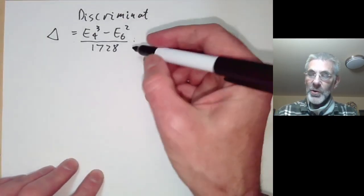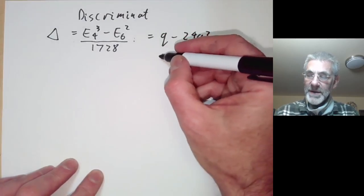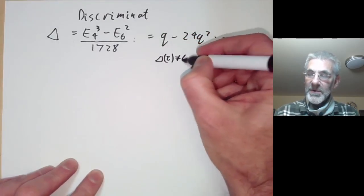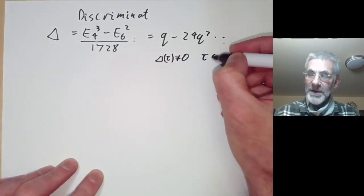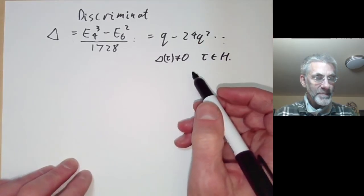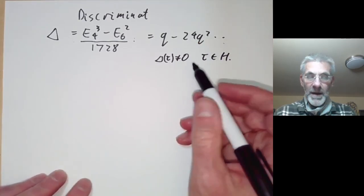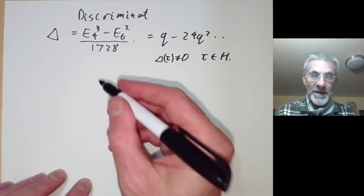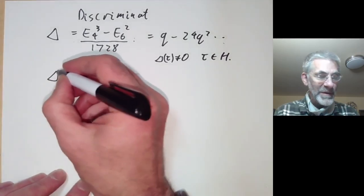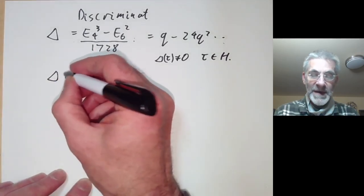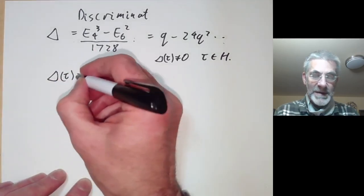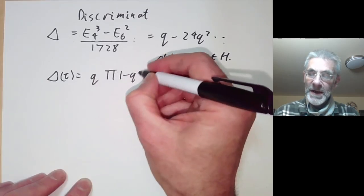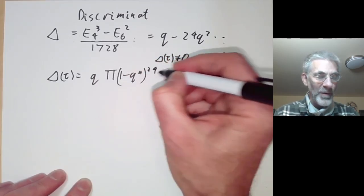We recall that Δ(τ) is non-zero for τ in the upper half plane. What we're going to show in this lecture is that there's another expression for Δ: Δ(τ) equals q times the product over n of (1 minus q to the n) to the 24th power.